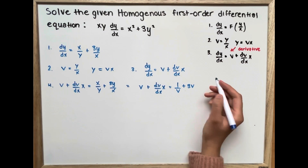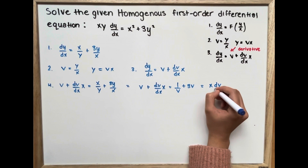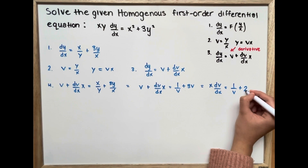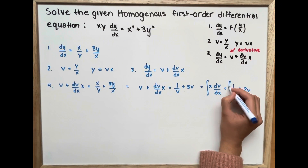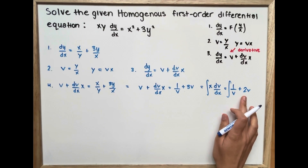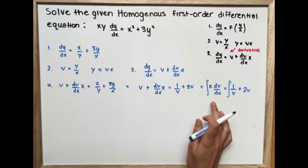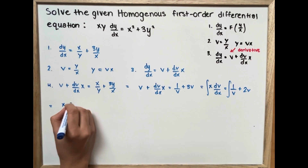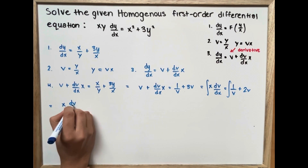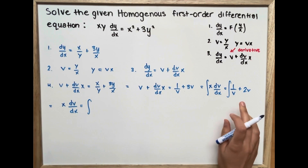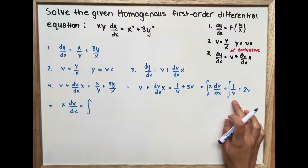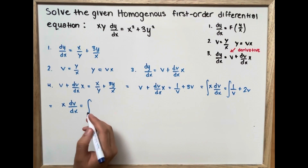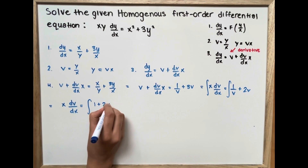Now we simplify: x times dv/dx equals 1 over v plus 2v. Before separating variables, we simplify the right side by making the denominators the same, which gives 1 plus 2v squared over v.